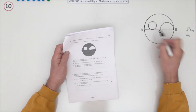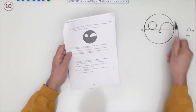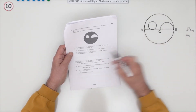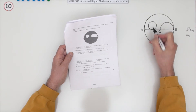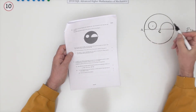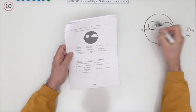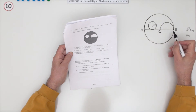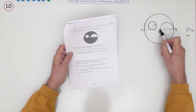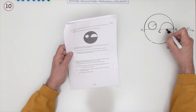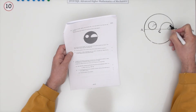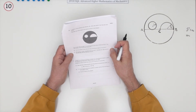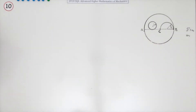Two holes have been made in the lamina. There's a circular hole of radius 1, and a semi-circular hole that goes from B to C — so that must be of length 4, making the semicircle's radius 2. Find the position of the centre of mass of the lamina relative to point A.